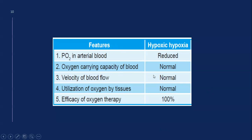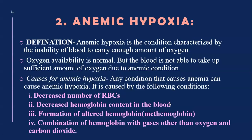If you give 100% oxygen to a patient with hypoxic hypoxia, the result is normal — the partial pressure of oxygen is restored. The most efficient efficacy of oxygen therapy is seen in hypoxic hypoxia.